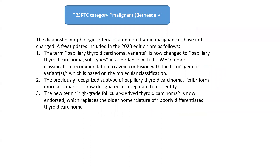Regarding category six: the term 'papillary thyroid cancer variants' has now been changed to 'papillary thyroid cancer subtypes,' aligned with the WHO tumor classification of 2022. The previously recognized cribriform variant of papillary thyroid cancer is now designated as a separate tumor entity. The new term 'high-grade follicular-derived thyroid cancer' is now endorsed, replacing the older nomenclature of 'poorly differentiated thyroid carcinoma' from the 2017 classification.